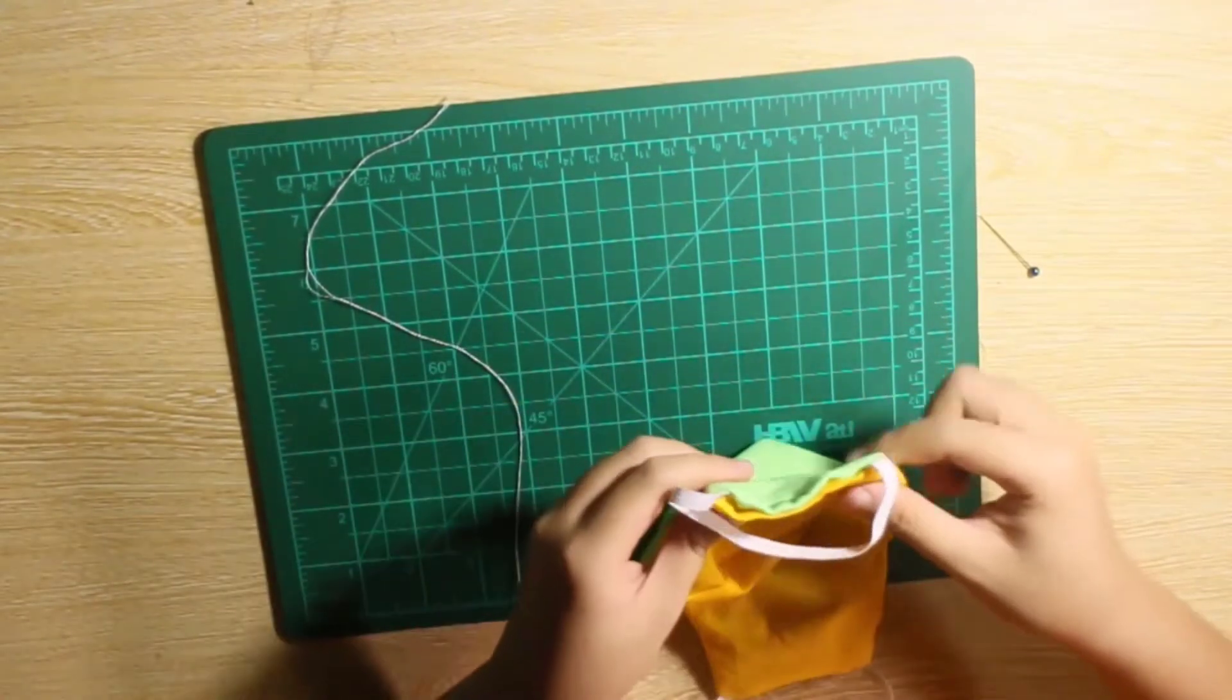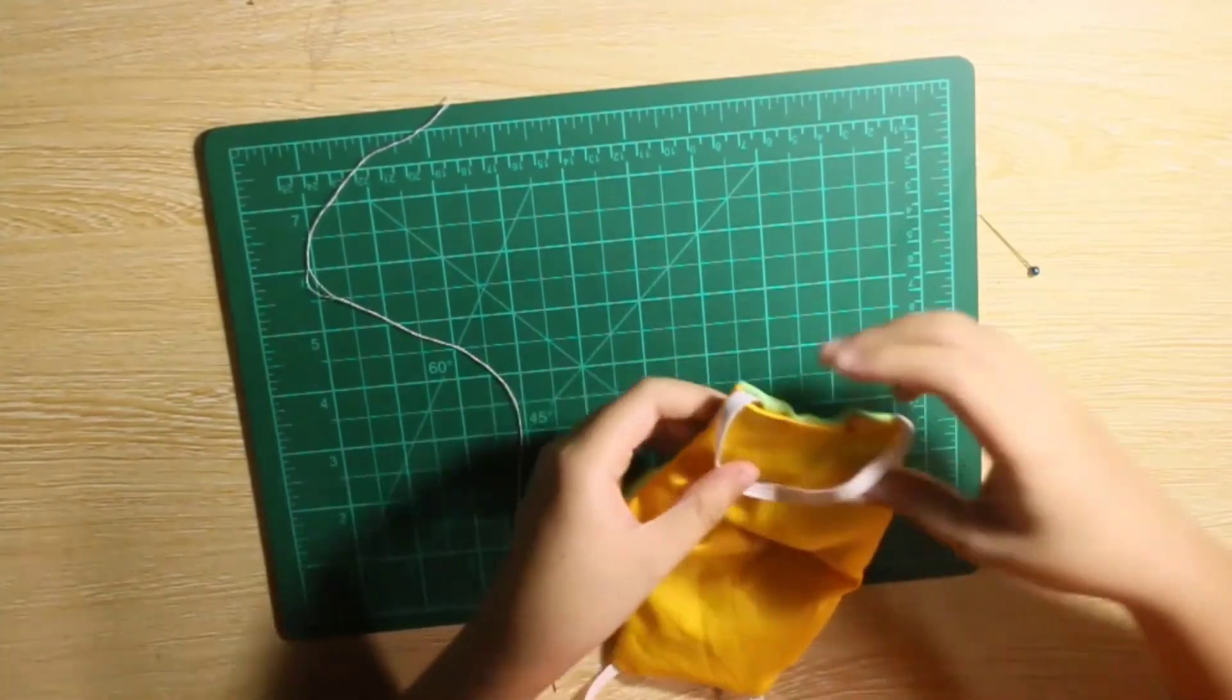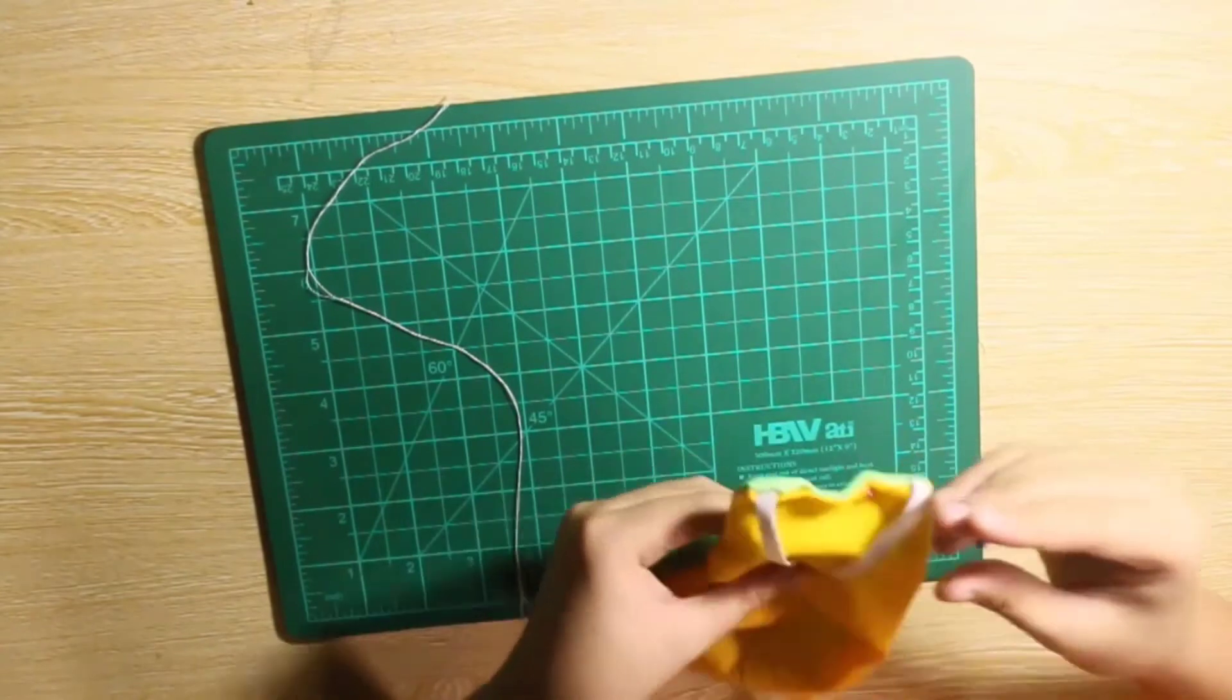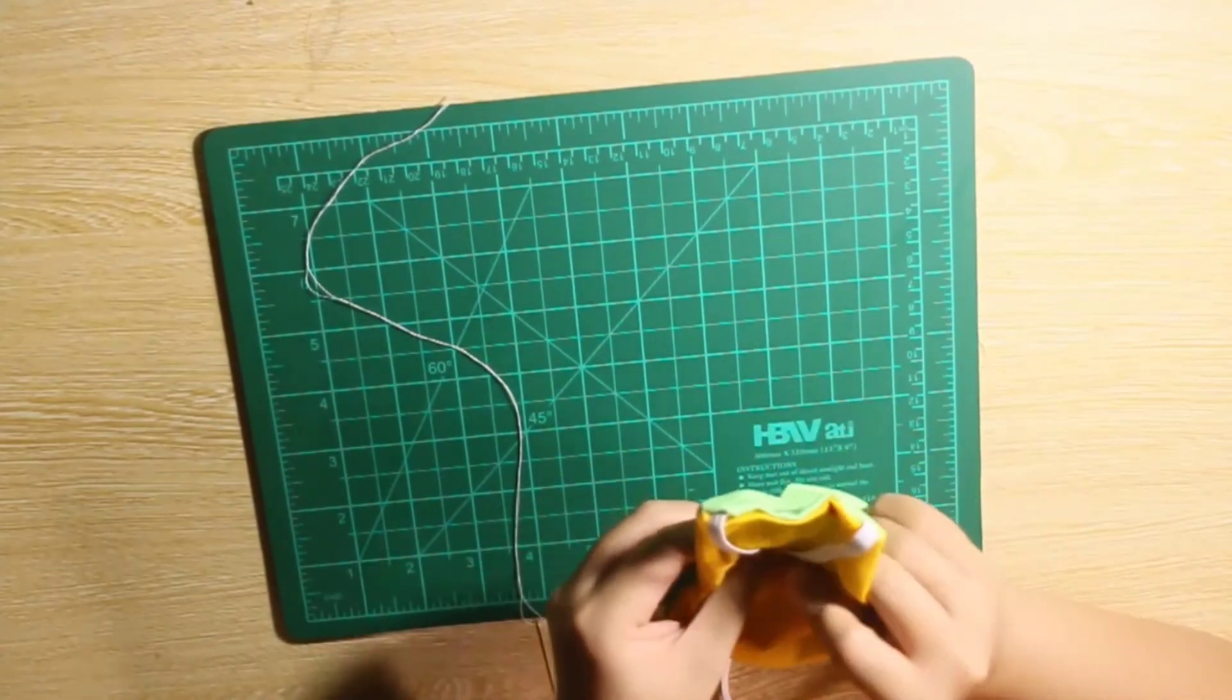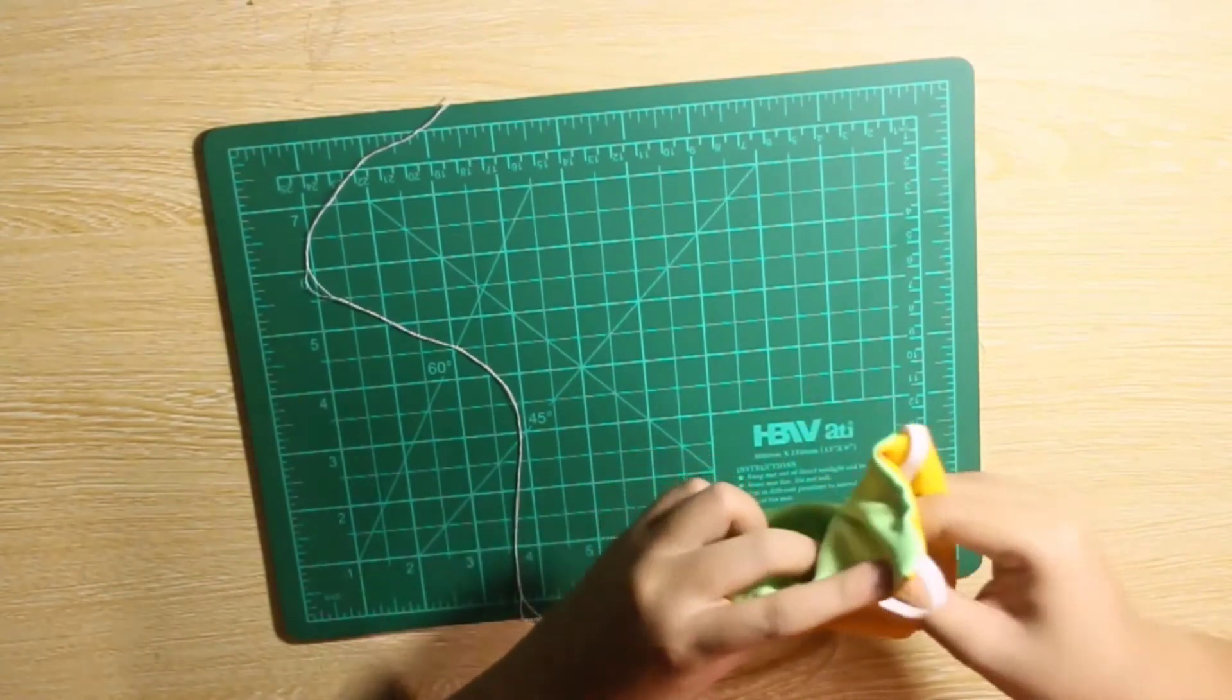As you can see after that, it is nice and clean and neat. On this one side you really can't see any of the stitching and we're gonna repeat that on the other side so it really looks clean.